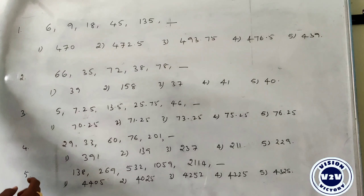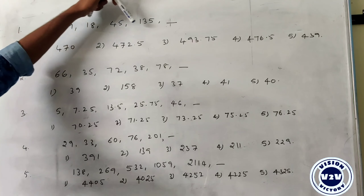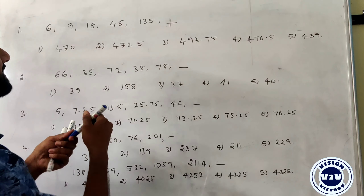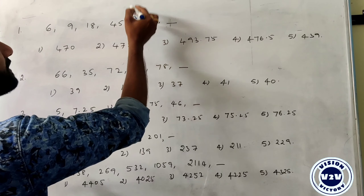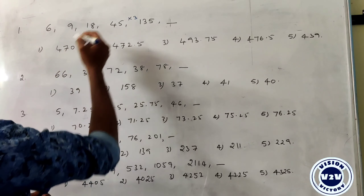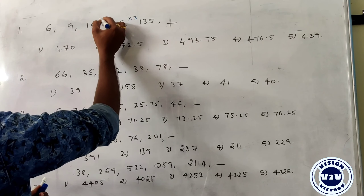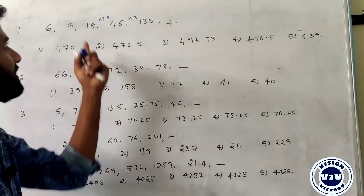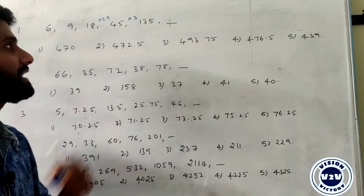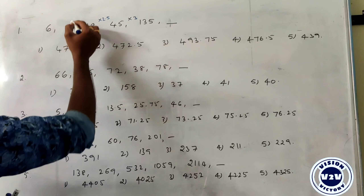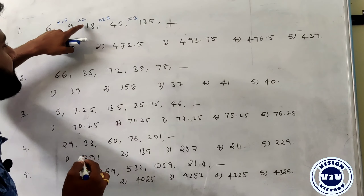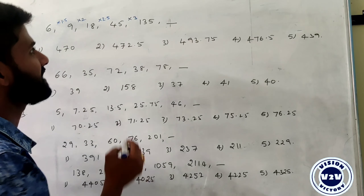Question 1: 6, 9, 18, 45, 135 — what is the next number? This involves multiplication. Notice 45 times 3 gives 135. But 18 becomes 45 because of multiplication by 2.5. The pattern uses increasing multipliers: 1.5, 2, 2.5, 3 — each increasing by 0.5.